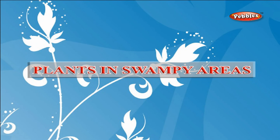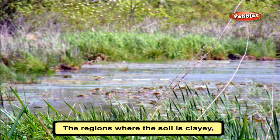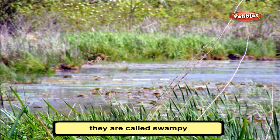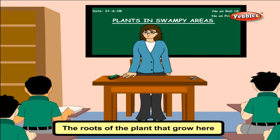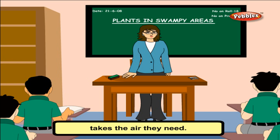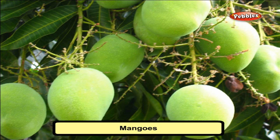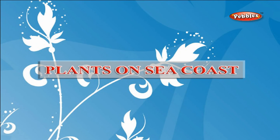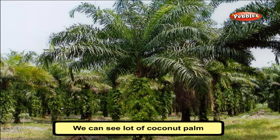Plants in Swampy Areas: The regions where the soil is clay, the water does not drain away. They are called swampy or marshy areas. The roots of plants that grow here do not get air in the soil, so they have adapted themselves accordingly. The roots that grow outside the soil take the air they need. For example, mangroves.